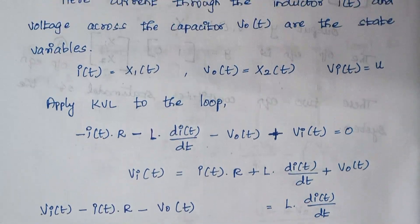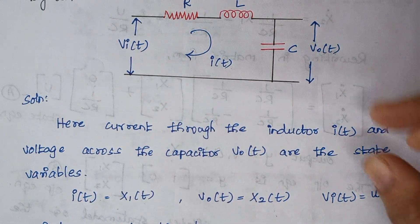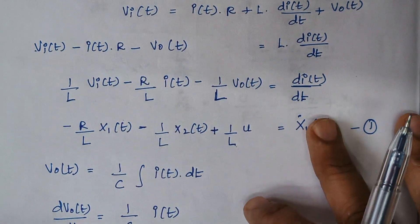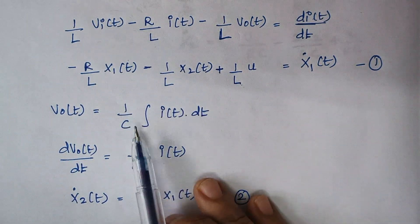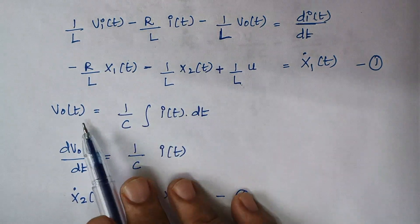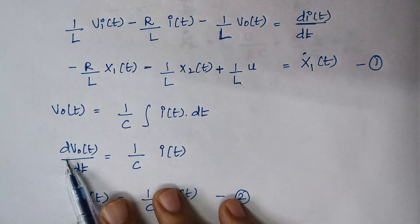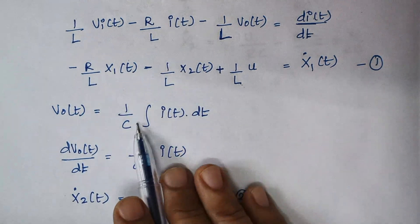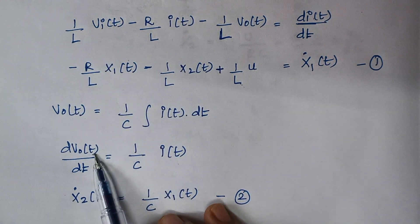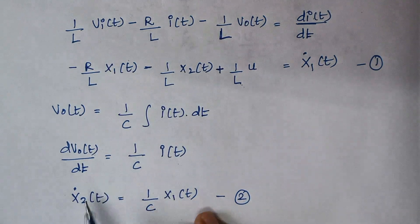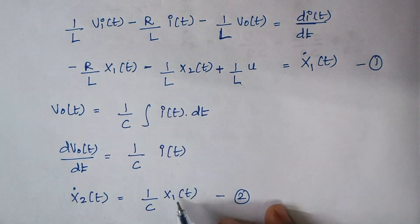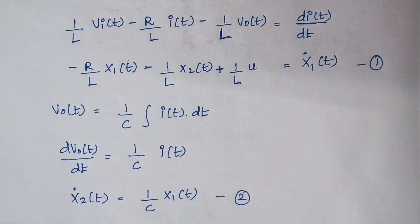Next, we write the expression for the output voltage — the voltage across the capacitor: V0(t) = 1/C × ∫I(t)dt. Differentiating both sides gives dV0(t)/dt = 1/C × I(t). Since V0(t) is x2(t), differentiating gives x2_dot(t), and 1/C × I(t) is 1/C × x1(t). This forms equation 2.